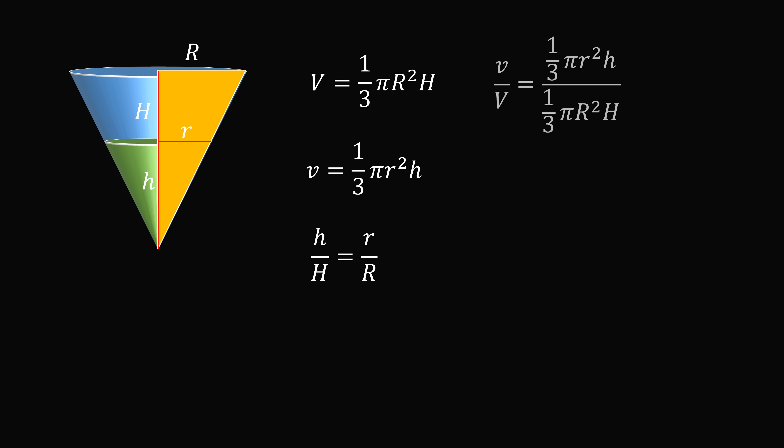We now take the ratio of the volumes. So we're going to get some cancellations. The 1 third terms will cancel and the pi terms will cancel. So we have the following formula. We can now take out the ratio of the radii which will be a square term and then we multiply it by the ratio of the heights.